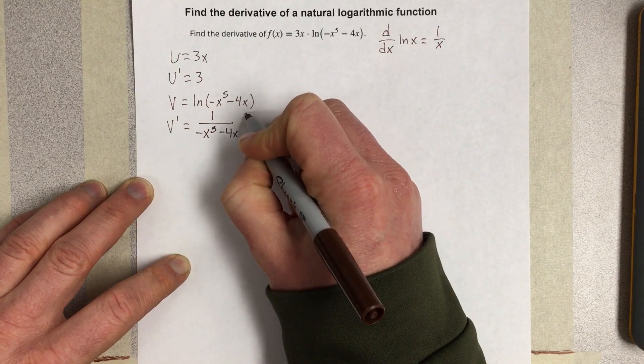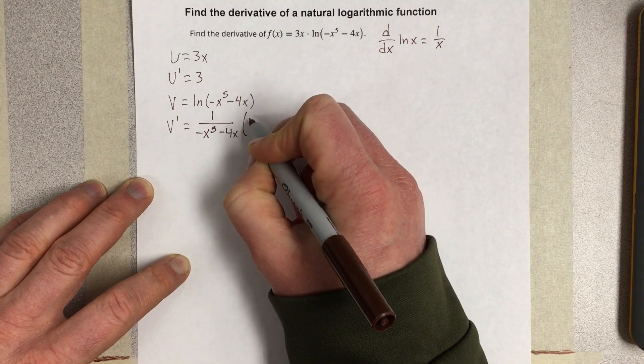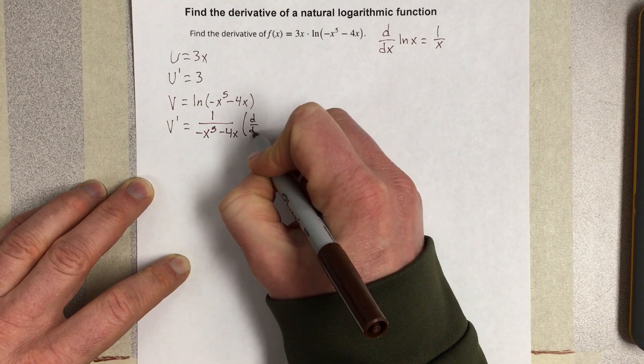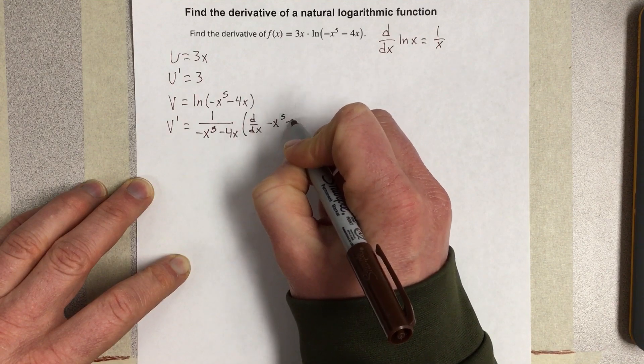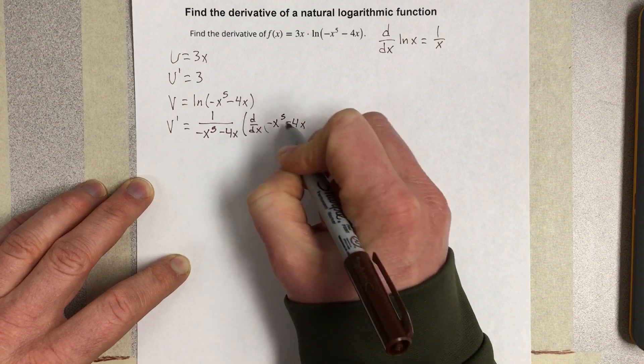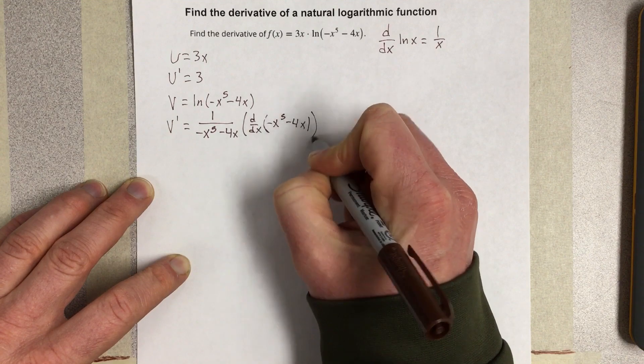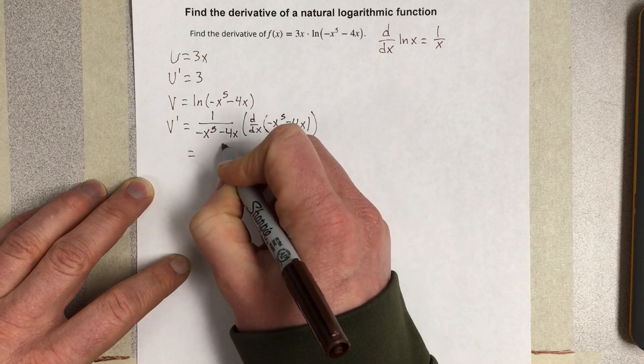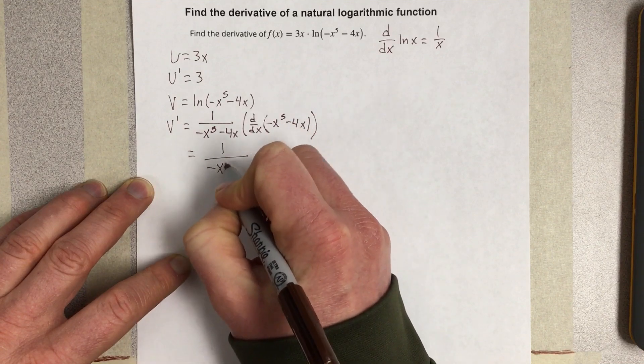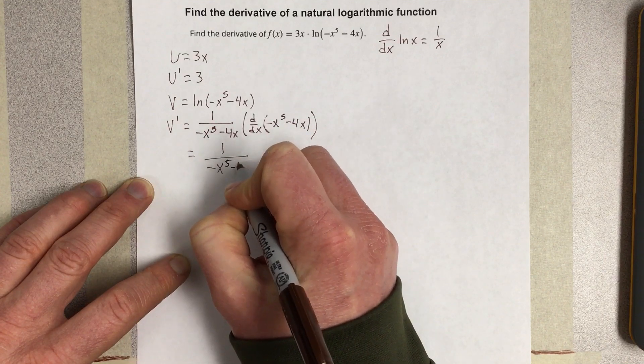But that's going to be multiplied times the derivative of the inside, which would be negative x to the 5th minus 4x. When I do the derivative there, I get 1 over negative x to the 5th minus 4x.